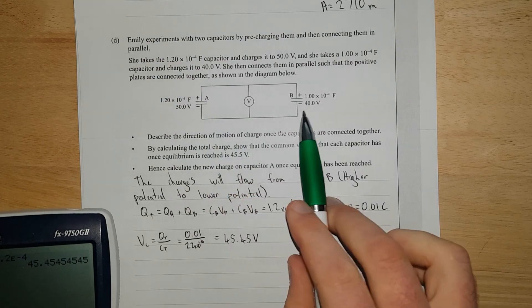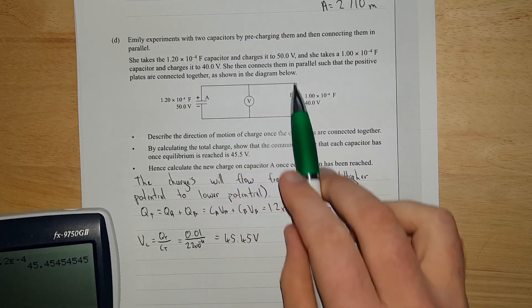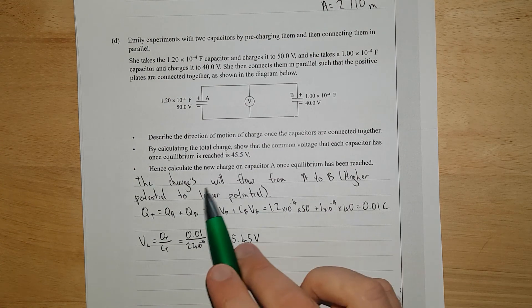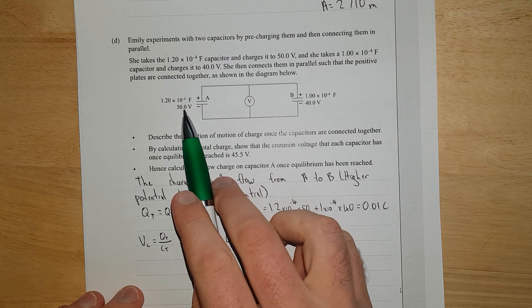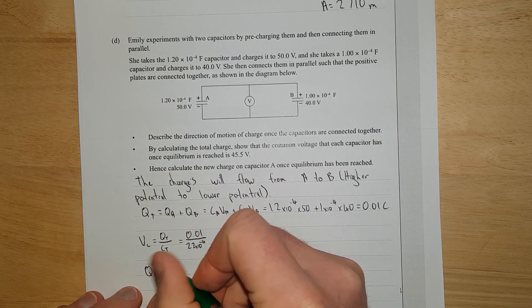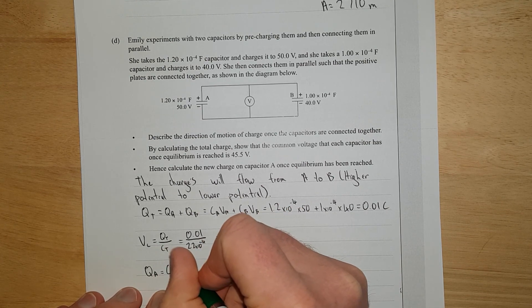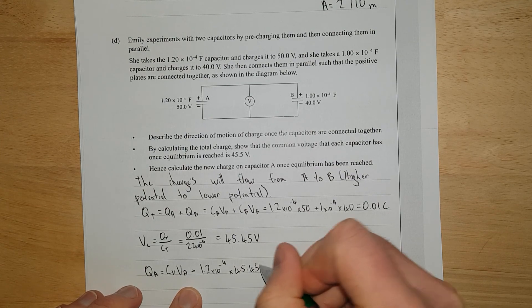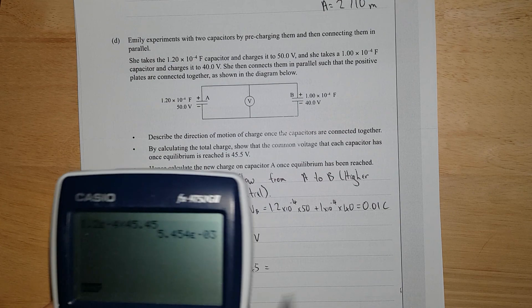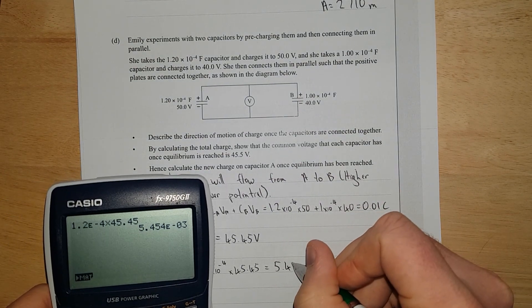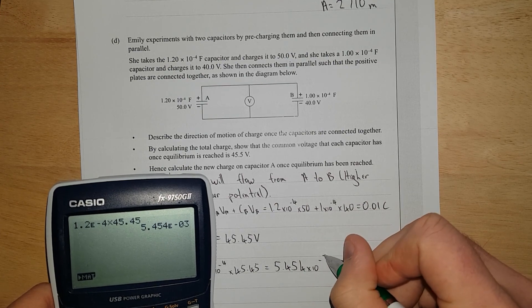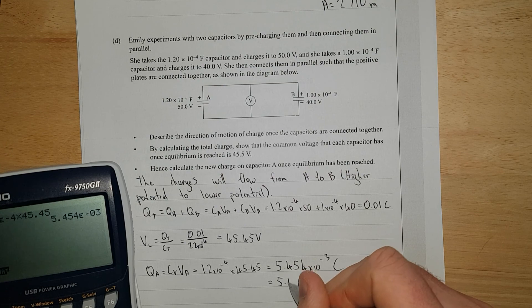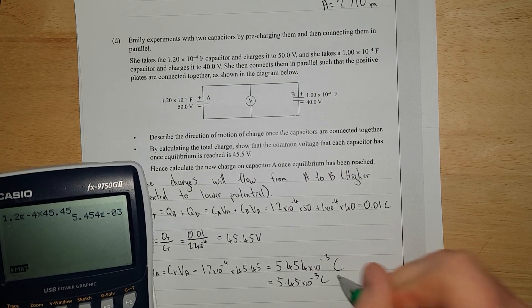Why do they have the same voltage? Well, if they had different voltages, currents would flow from one to the other, so the potential energy difference between the two is zero. That's why they've got to have the same voltage. Calculate the new charge on capacitor A. Q of A equals CV, C of A times V of A. That's 1.2 times 10 to the negative 4 times 45.45, which equals 5.45 times 10 to the negative 3 coulombs. All right, that's it.